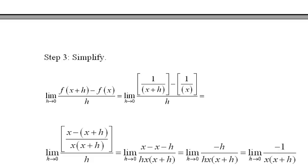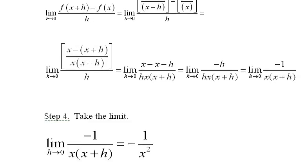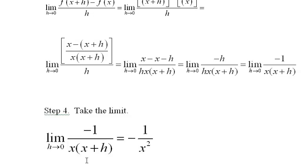Now it's possible for me to take this limit. That's what I do in step 4. If h goes to 0, this gets closer and closer to x times x on the bottom and negative 1 on the top. I bring the negative out front and my answer is -1/x².